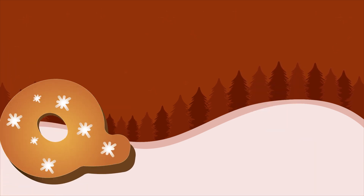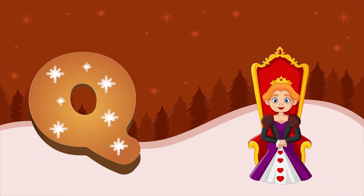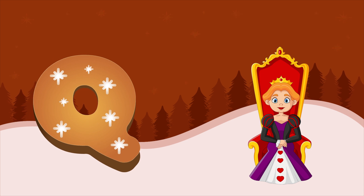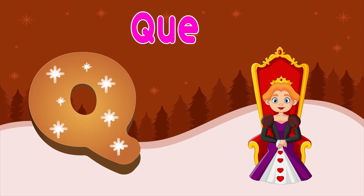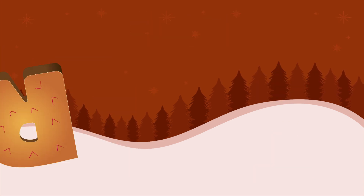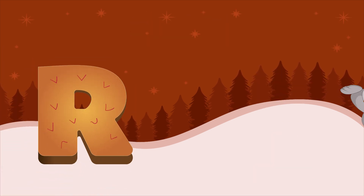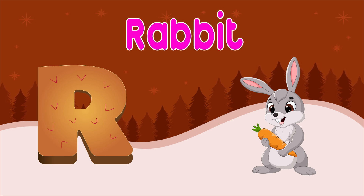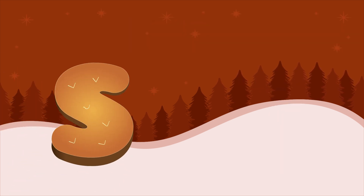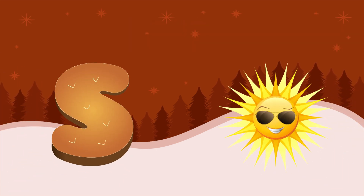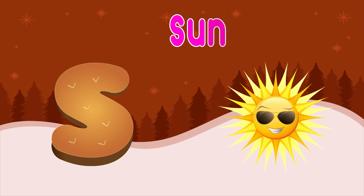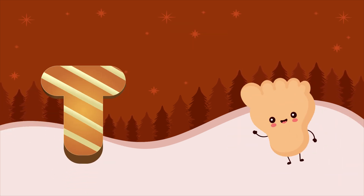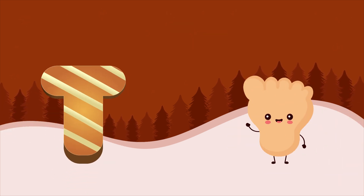Q is for queen, q-q-queen. R is for rabbit, r-r-rabbit. S is for sun, s-s-sun. T is for toad, t-t-toad.